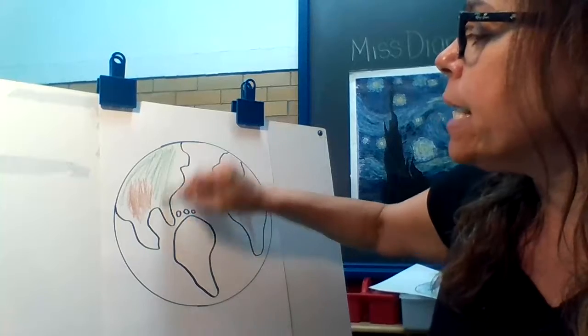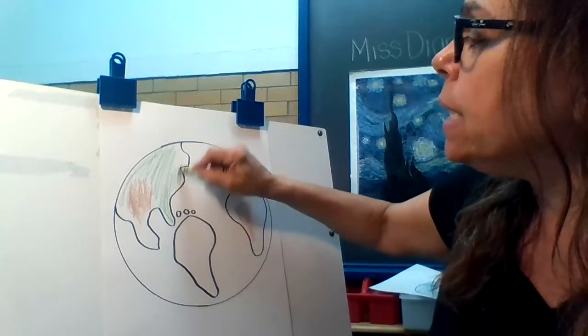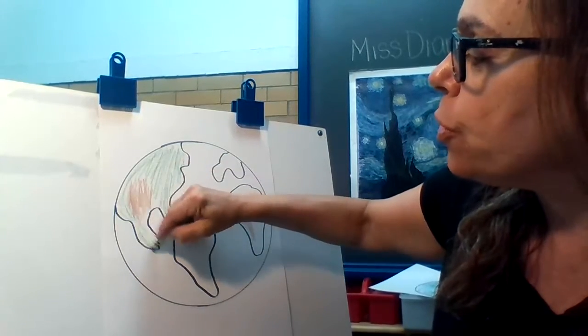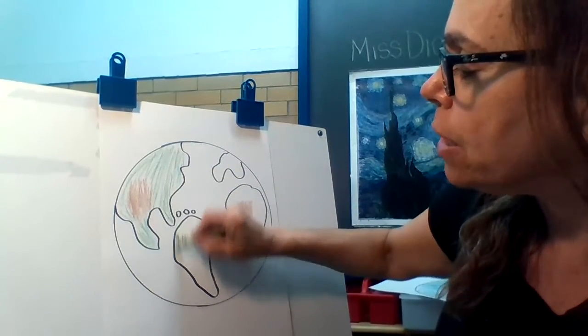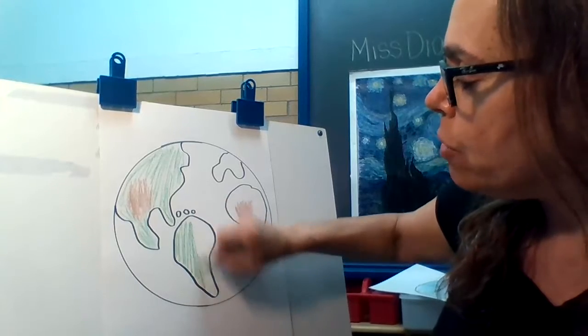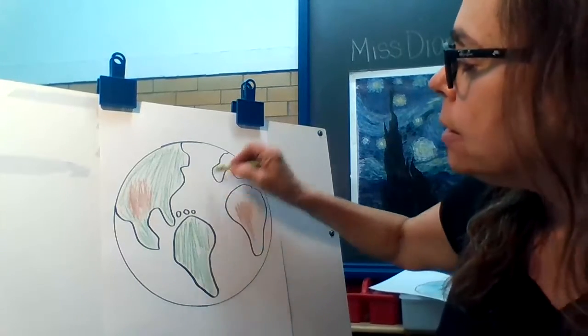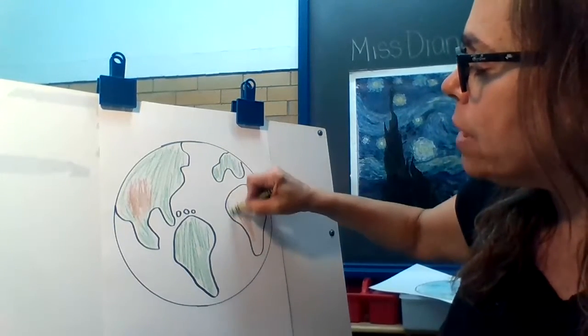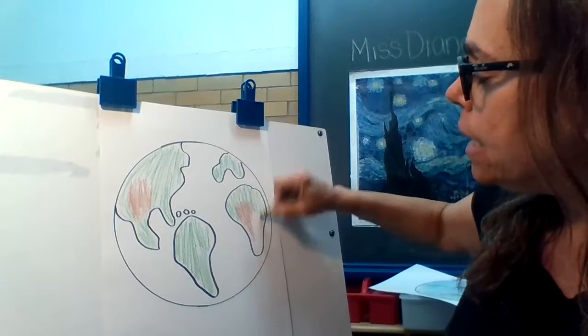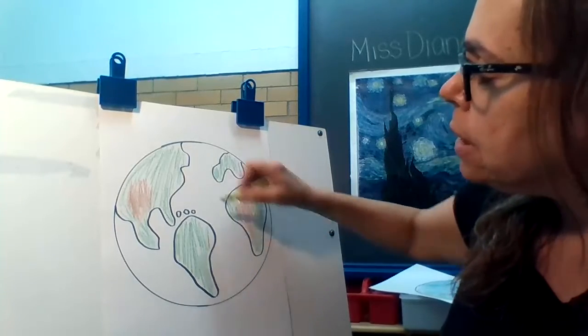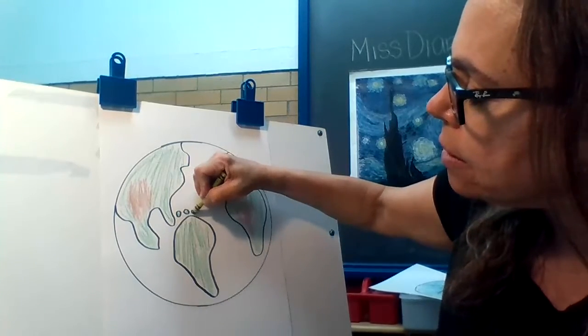The rest of the land, I'm going to make green. Just color in the rest of the land green. I'm going to do it quickly just so I can show you what to do. I want you to do it nicely. I'm going to color in all the land green and brown and the islands.